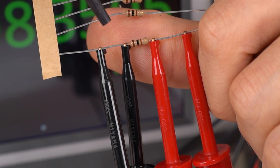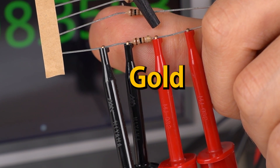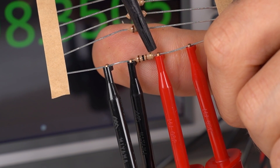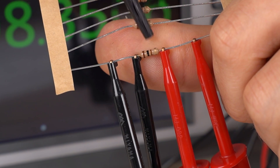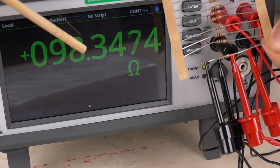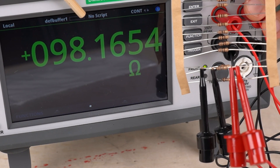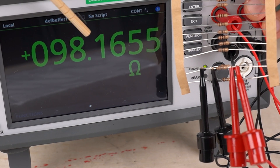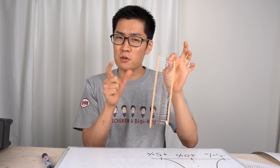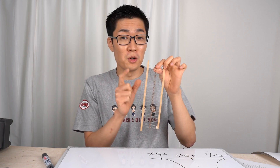Let's actually measure the resistance values. This carbon film resistor has brown, black, brown, and gold bands, so the resistance value is 100 ohms. The gold band shows the resistance tolerance, which is plus or minus five percent. Let's measure the actual resistance value — it's 98.3 ohms, not exactly 100 ohms. Let's check other resistors from the same batch — this one is 98.1 ohms. The nominal resistance value is 100 ohms, but the actual values are a little different. The allowed deviation from the nominal value is called resistance tolerance.